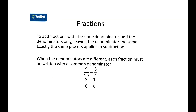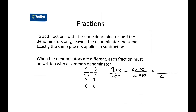When adding or subtracting fractions, we need the denominator to be the same in each case. For 9 over 10 minus 3 over 40, the common denominator is 40. Multiplying the 10 by 4 gives 40, so we multiply the top by 4. The other fraction's bottom is already 40 so multiply the top by 10. We get 36 minus 30 over 40, which is 6 over 40, simplified to 3 over 20.